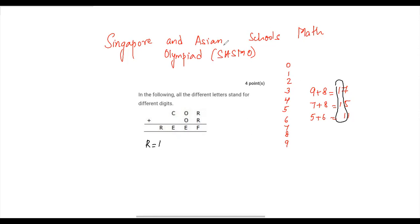Once we establish that R equals 1, both R values become 1, and therefore 1 plus 1 means F will be equal to 2. Now we know there has to be a carryover.